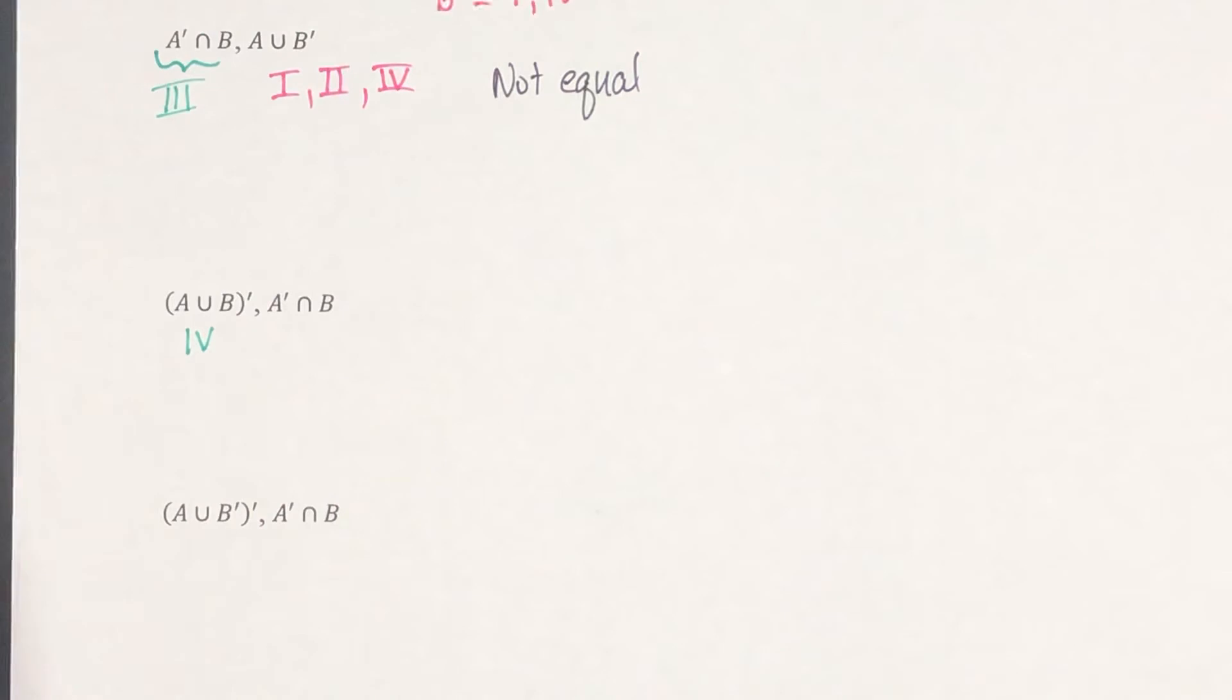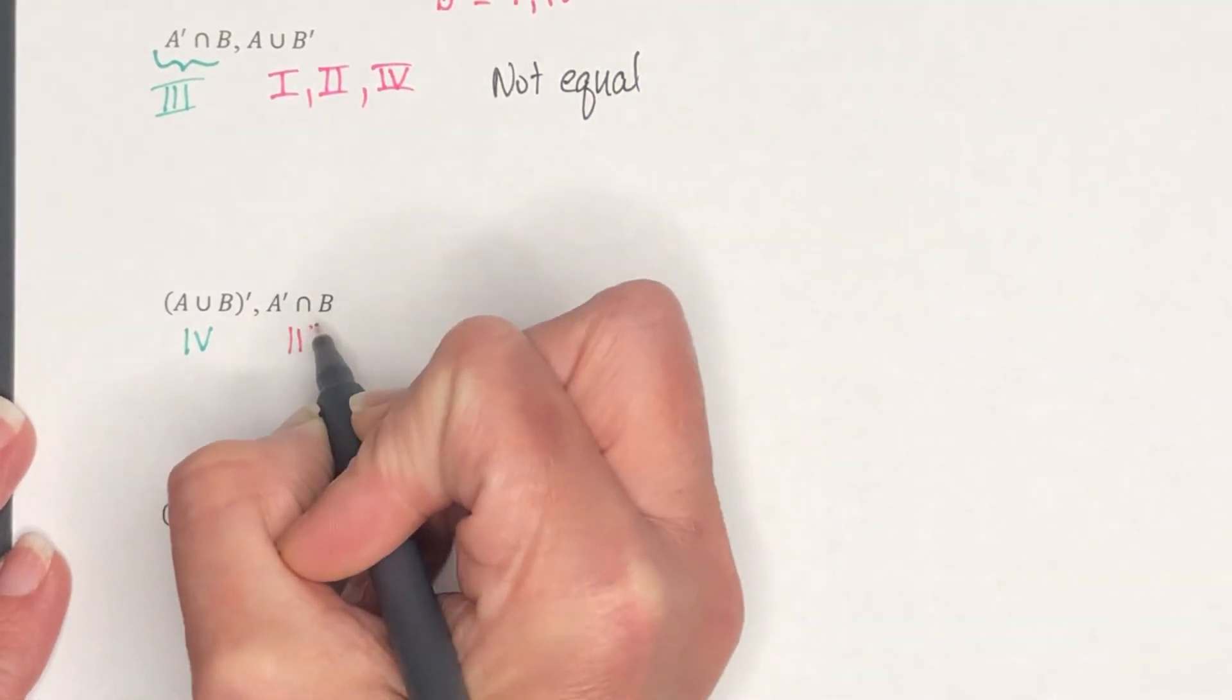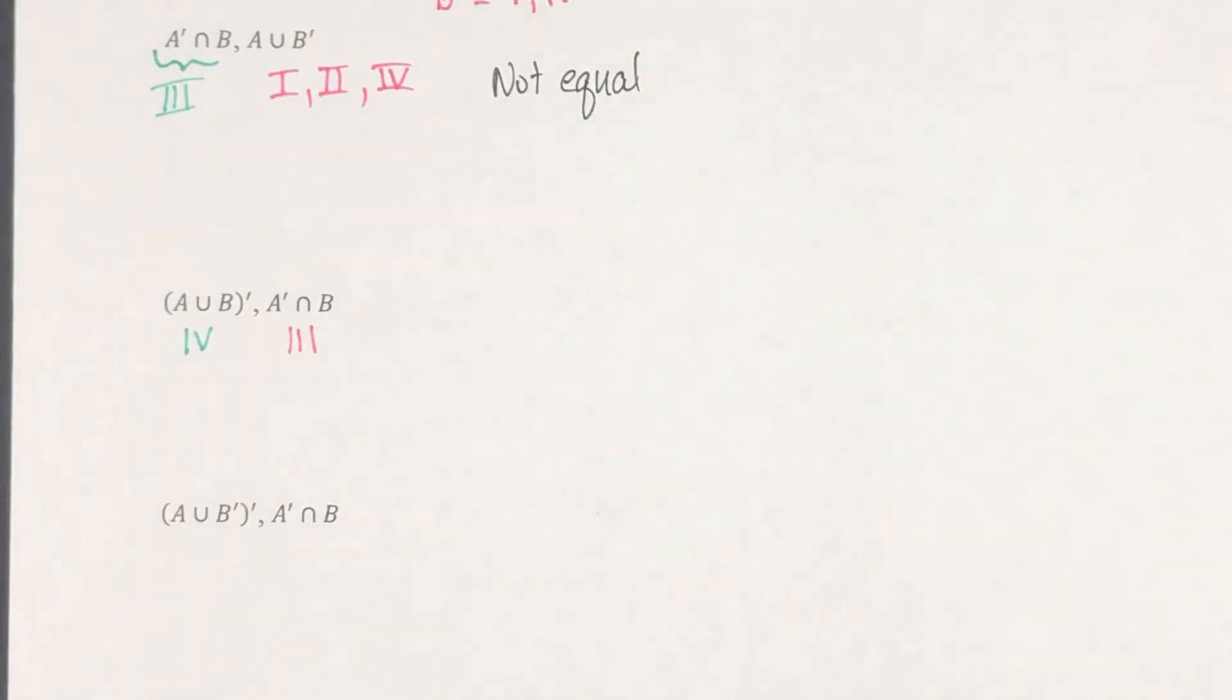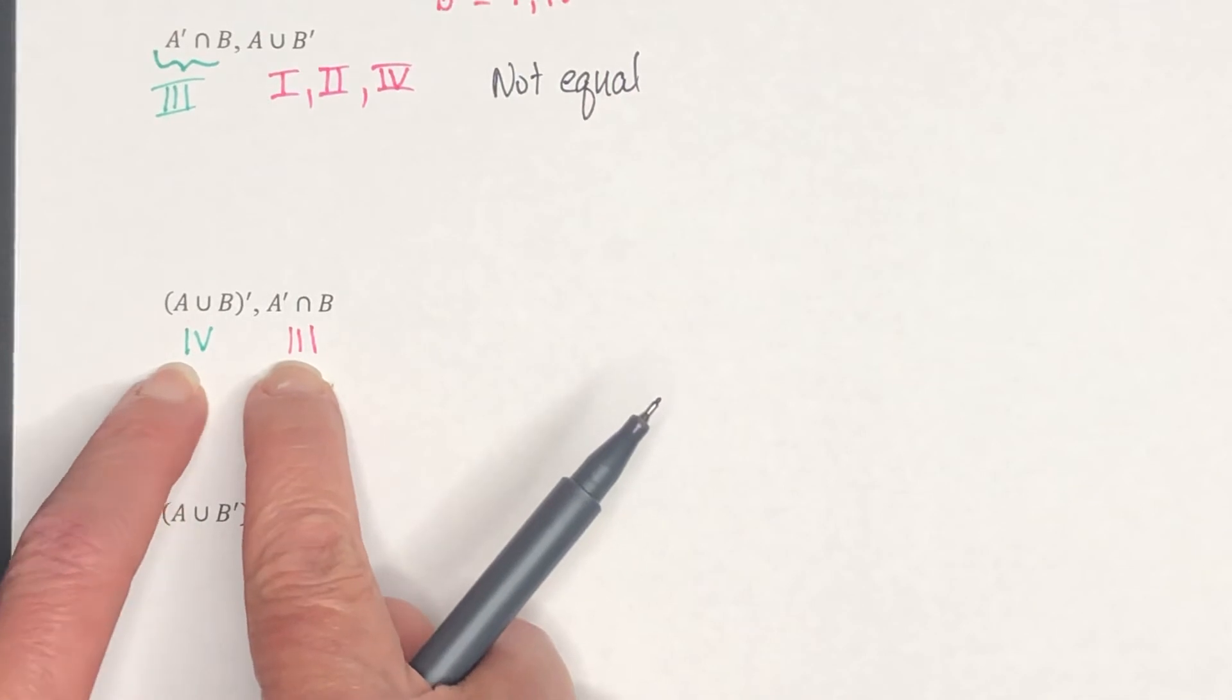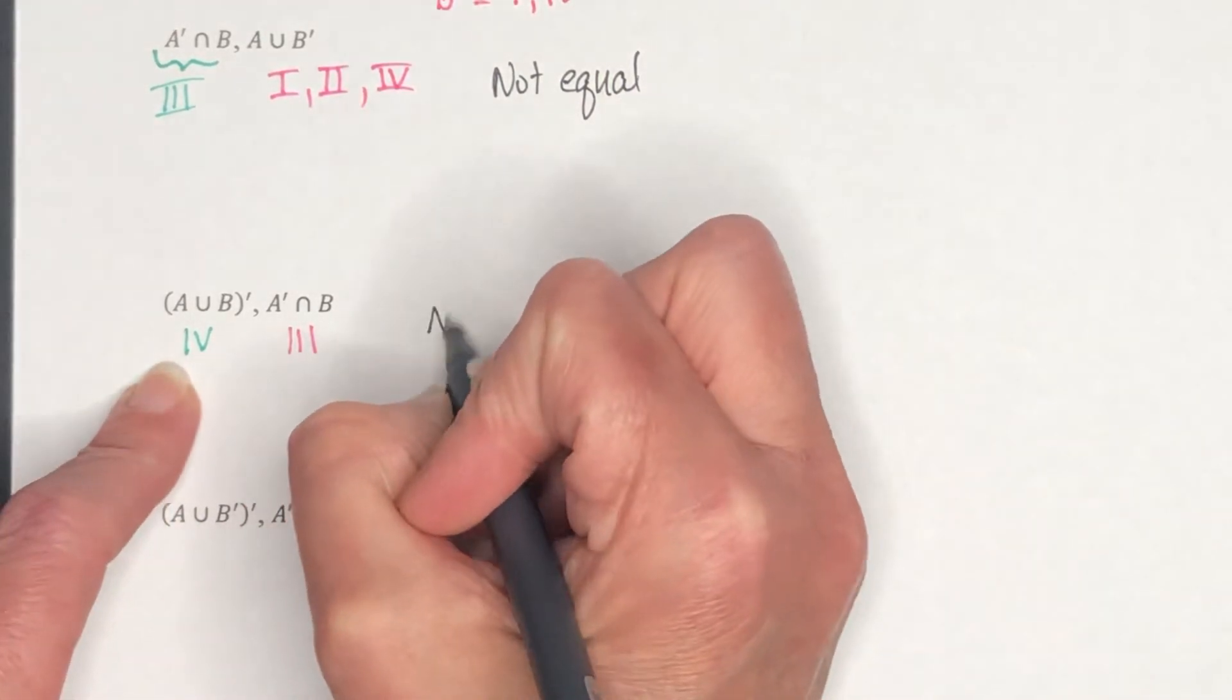So this one would be region 3. These are not the same. They're not talking about the same regions. So these are not equal.